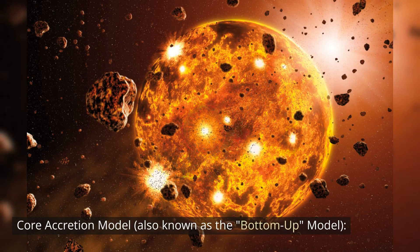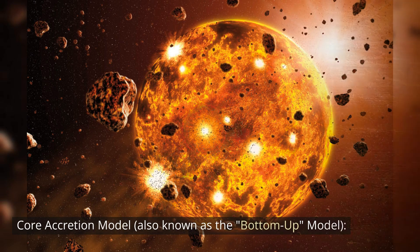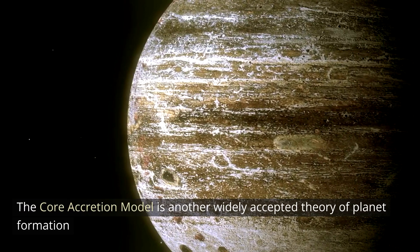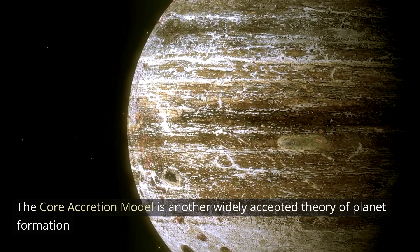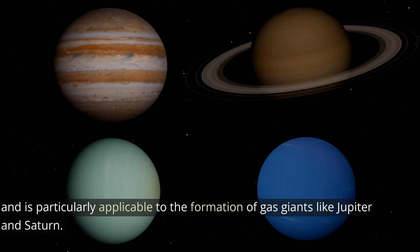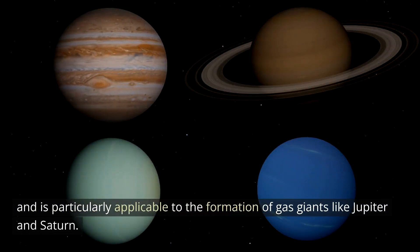Core accretion model, also known as the bottom-up model. The core accretion model is another widely accepted theory of planet formation and is particularly applicable to the formation of gas giants like Jupiter and Saturn.